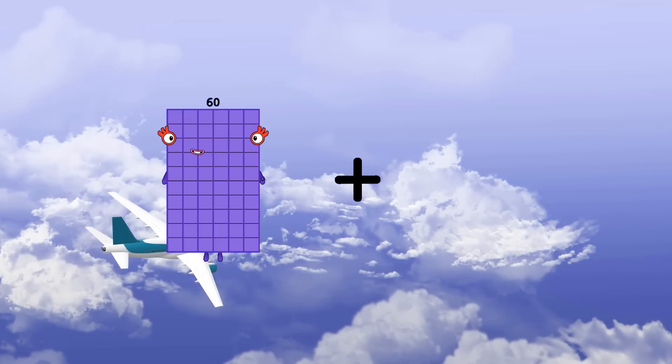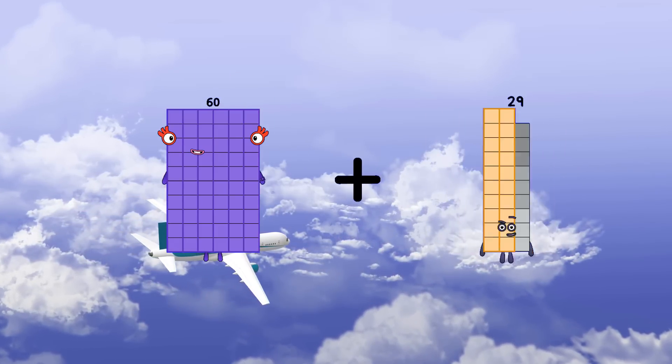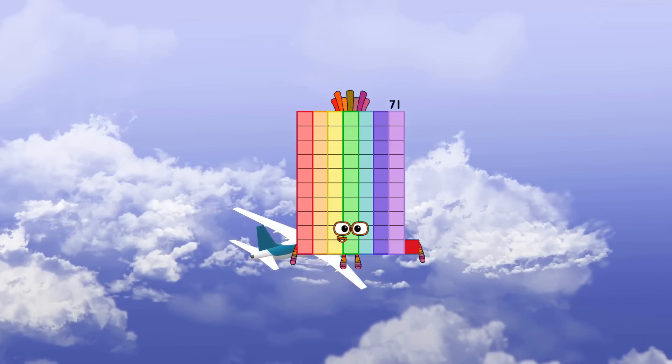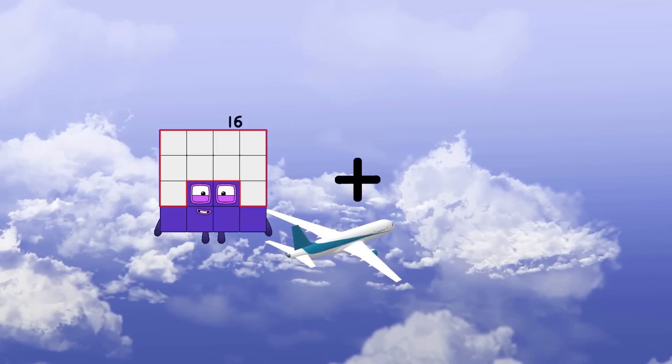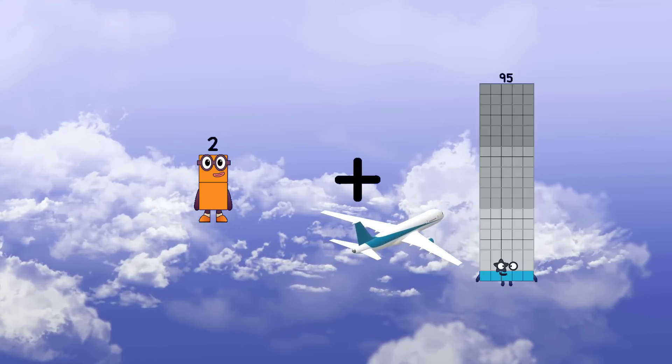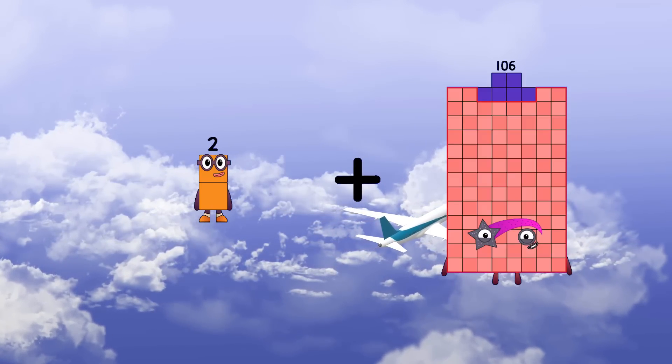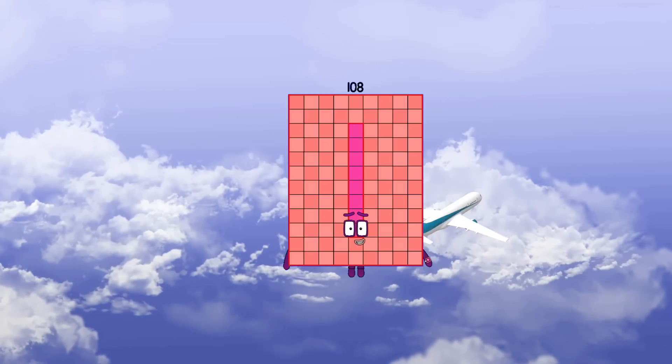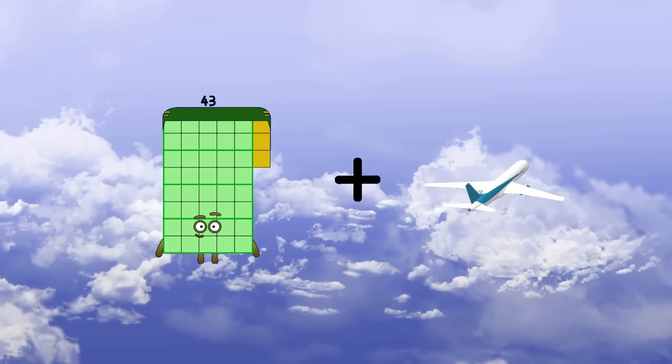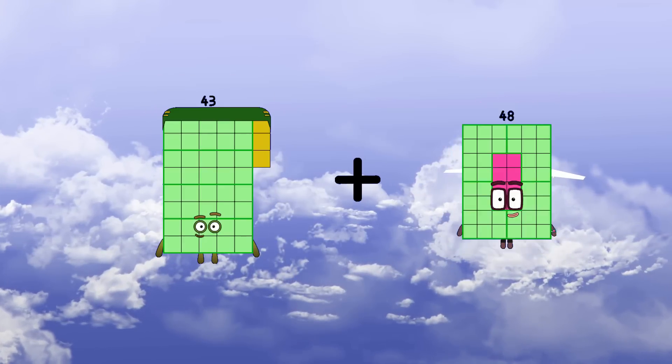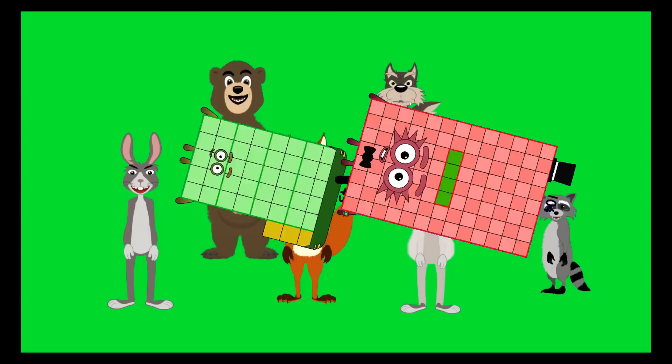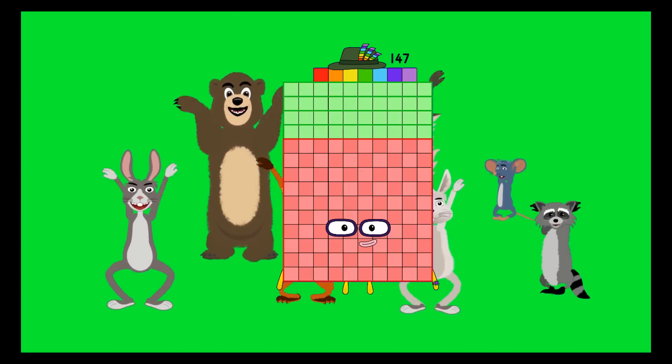60 plus 11 equals 71. 2 plus 106 equals 108. 43 plus 104 equals 147.